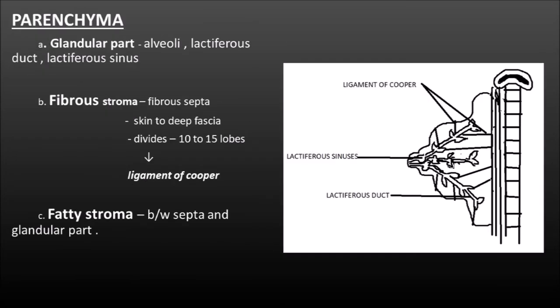The external features basically consist of two structures which are the skin and the parenchyma. The parenchyma consists of three parts: the glandular part, fibrous stroma and the fatty stroma. The glandular part consists of the alveoli, lactiferous ducts and the dilated part called the lactiferous sinuses. There is a diagram of the mammary gland which exactly locates the lactiferous duct and the lactiferous sinuses. The fibrous stroma consists of fibrous septa which extend from the skin to the deep fascia and divide the gland into 10 to 15 lobes by the ligament of Cooper. The fatty stroma lies between the septum and the glandular part.